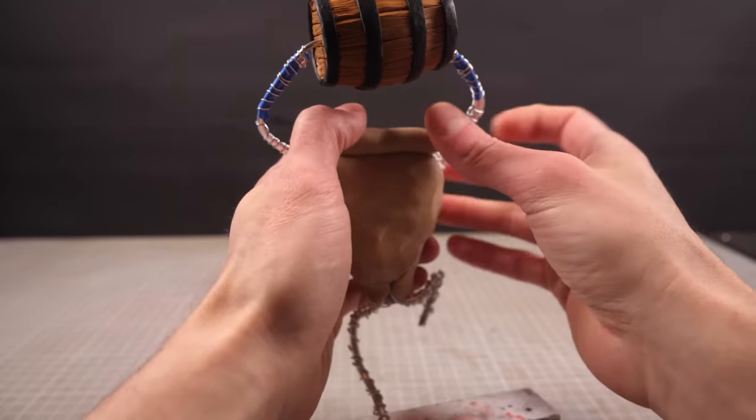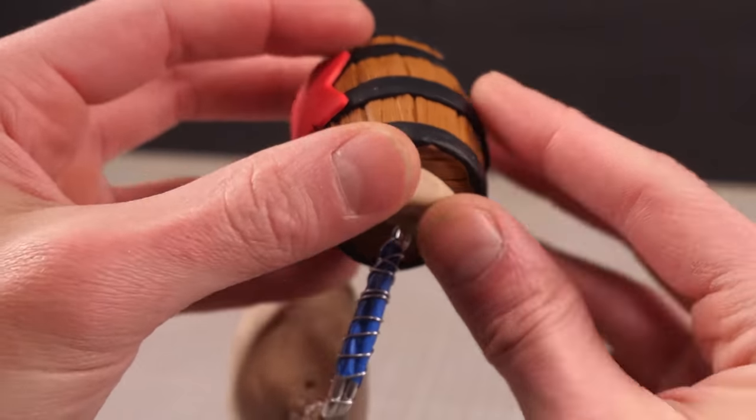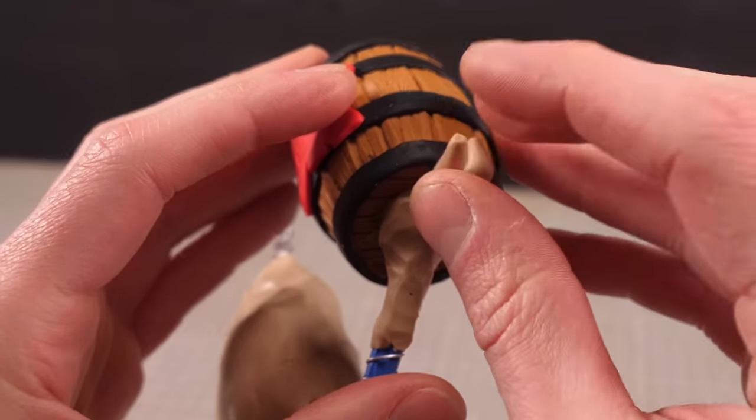Most of Donkey Kong's body is covered in fur, though, so I really only need to add skin to his chest and belly before I can get started making his hands.